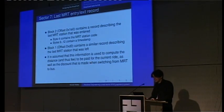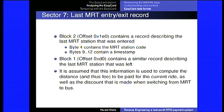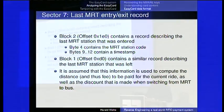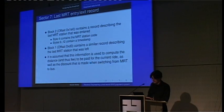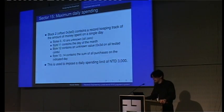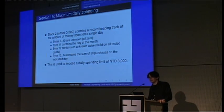There's another interesting sector: sector 7 contains the last MRT entry or exit record, including the MRT station code and a timestamp. It's used to compute discounts — when you switch from subway to bus or between subway lines, there's a discount. Using this information, the system determines what means of transport you used last, when that was, and whether you're eligible for the discount. There is also a maximum daily spending limit of 3,000 NT dollars per day per card, though you can charge up to 10,000 NT dollars on the card.